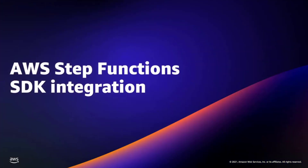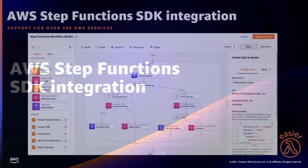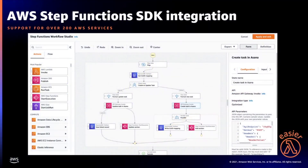With the workflow studio comes the AWS SDK integration. Step Functions has added support for over 200 AWS services and 9,000 APIs. Previously, developers had to choose from 46 supported service integrations — if the integration wasn't available, they had to code it in a Lambda function, adding complexity and cost. Now developers can integrate their state machines directly to AWS services, making it easier to orchestrate workflow development.